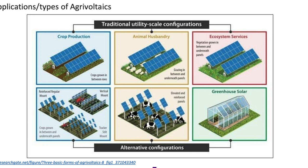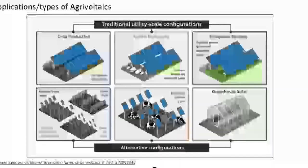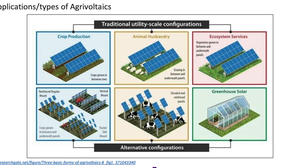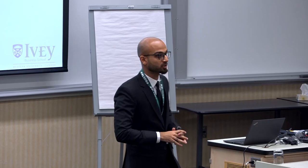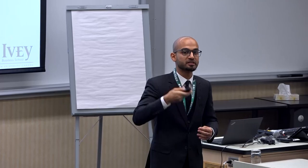The second type is animal husbandry — you can have sheep grazing or rabbit grazing in between or underneath the solar panels. Then you have ecosystem services as well, where you can grow vegetation underneath the panels. With regards to crop production, you can have different types of racking designs — regular reinforced polar mounts, vertical mounted racking designs, tracking systems which track the sun throughout the day, and elevated solar panels also known as stilt mounted, which are around four to five meters high. You can also have greenhouse solar, where you put solar panels on top of a greenhouse and do cropping underneath while the panels generate electricity.